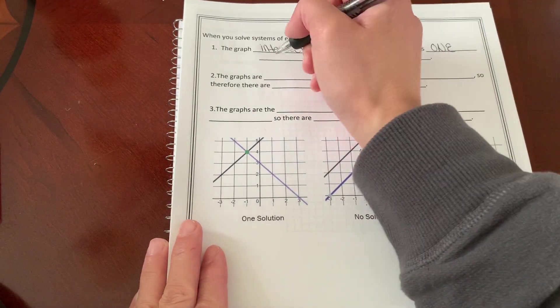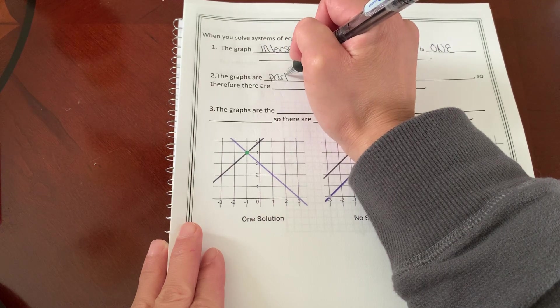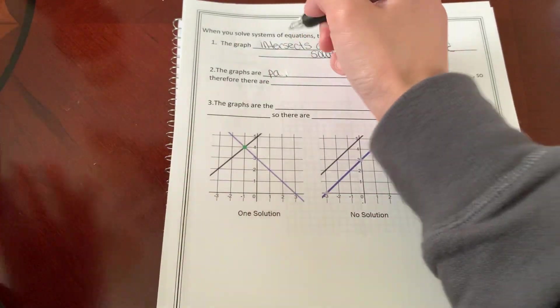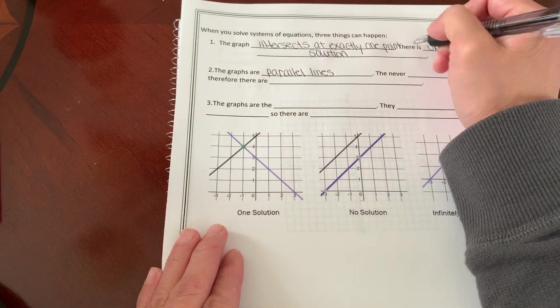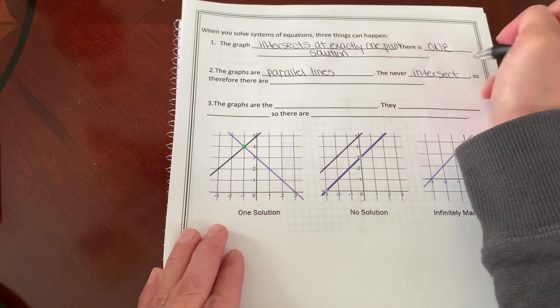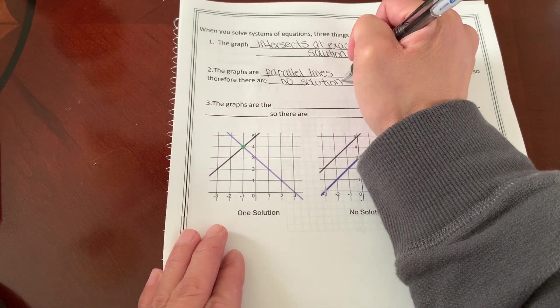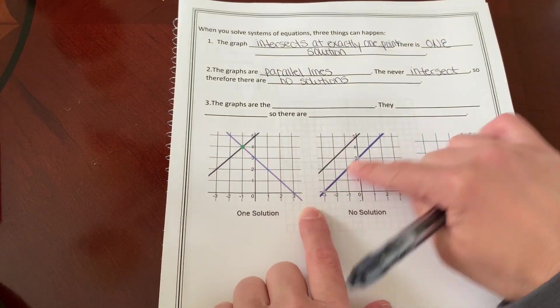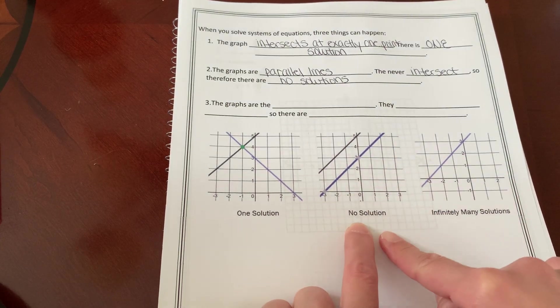The second thing that could happen are the graphs are parallel lines. They never intersect. So therefore, there are no solutions. And that's what it looks like down here. If you graph the two lines, they will be parallel. They will never touch. So there will be no solutions.